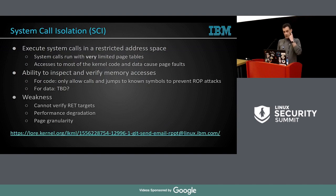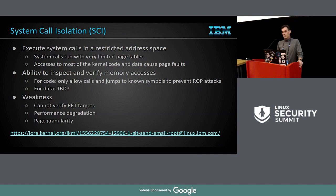Before that, we tried something called system call isolation, which was an attempt to run system call execution in a very restricted address space — kind of a continuation of the PTI approach. We took the PTI page table, added to it the minimum mappings necessary to enter a system call, and then the actual system call execution ran without any kernel code or data mapped. It faulted a lot and was not very fast.